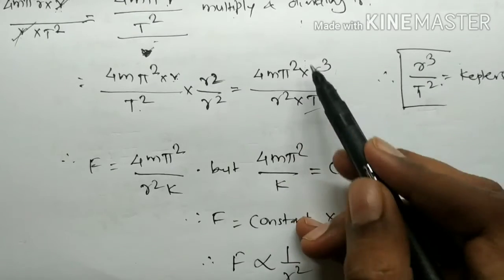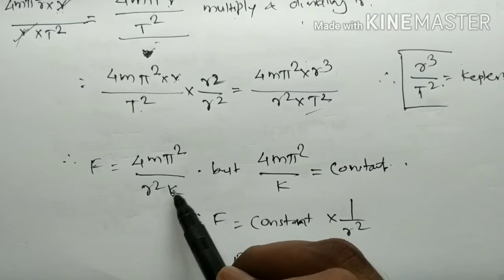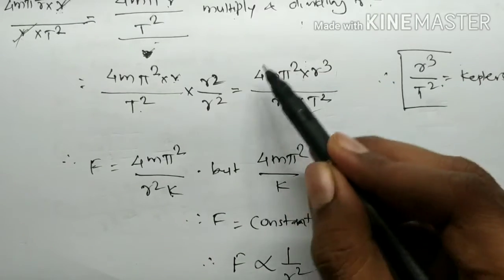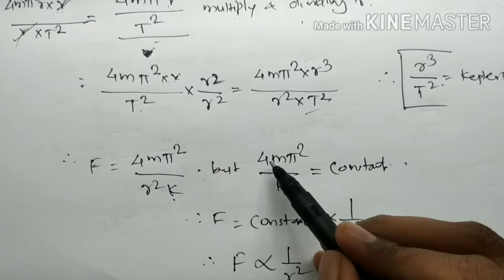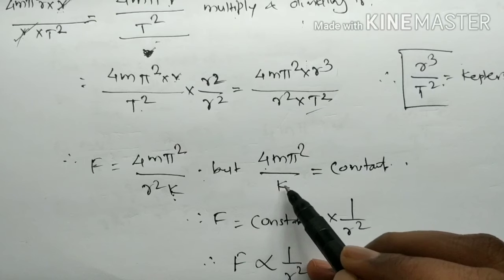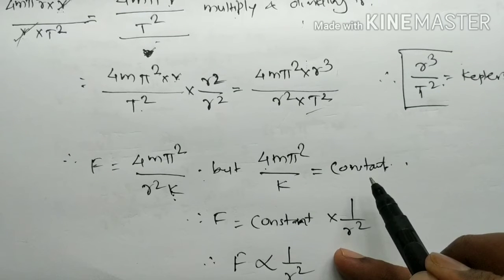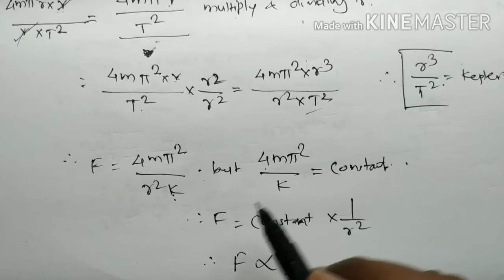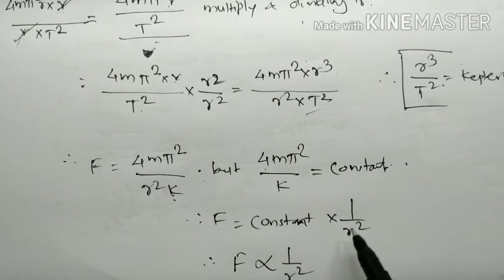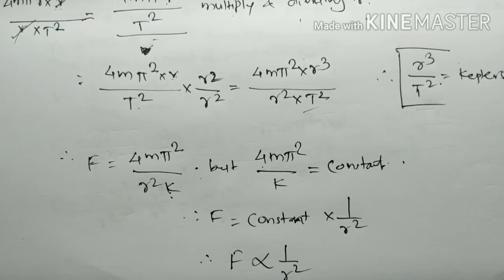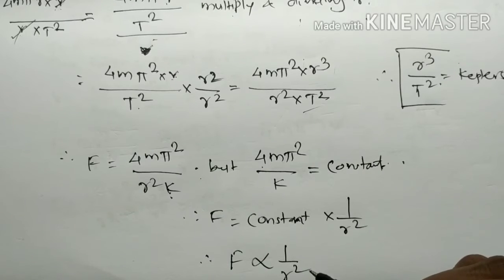From this term, substituting K for r³/T², we get F = 4mπ²K·(1/r²). Since 4mπ²/K is a constant, F is equal to a constant times 1/r². Therefore, force is inversely proportional to r². Newton concluded that the centripetal force acting on the planet must be inversely proportional to the square of the distance between the planet and the sun.